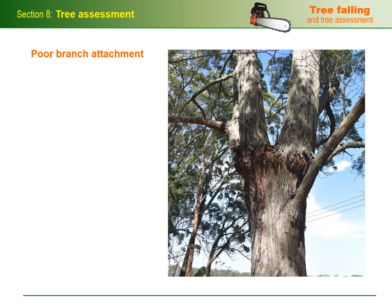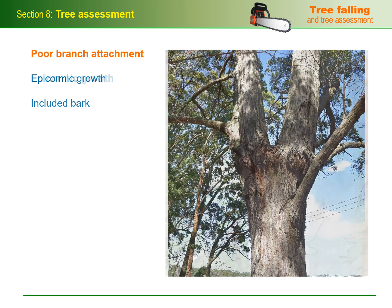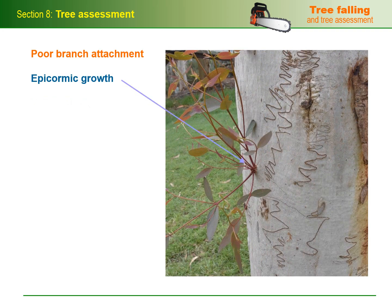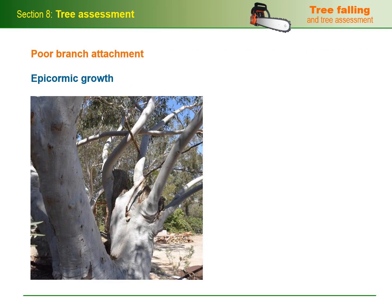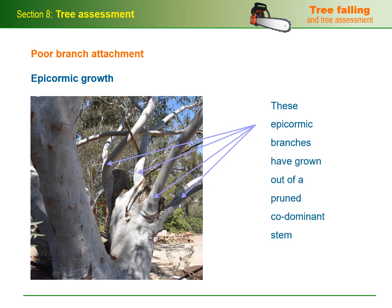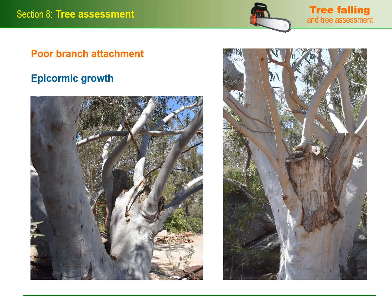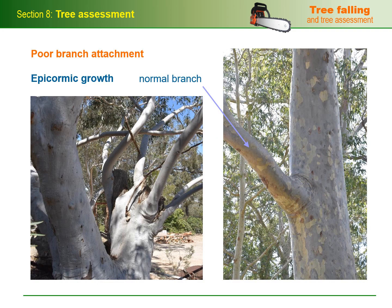Now we'll move on to the main causes of poor branch attachment. In most trees, poor branch attachment is caused by either epicormic growth or included bark. Epicormic growth arises from epicormic buds which normally lie dormant underneath the bark. When the tree is stressed or damaged — such as from a bushfire, drought or insect attack — the buds respond by sending out new shoots. The problem with branches that develop from epicormic shoots is that they only have a shallow attachment to the stem. Epicormic branches tend to be much weaker than branches that form during normal tree growth, since normal branches are embedded well inside the main stem.